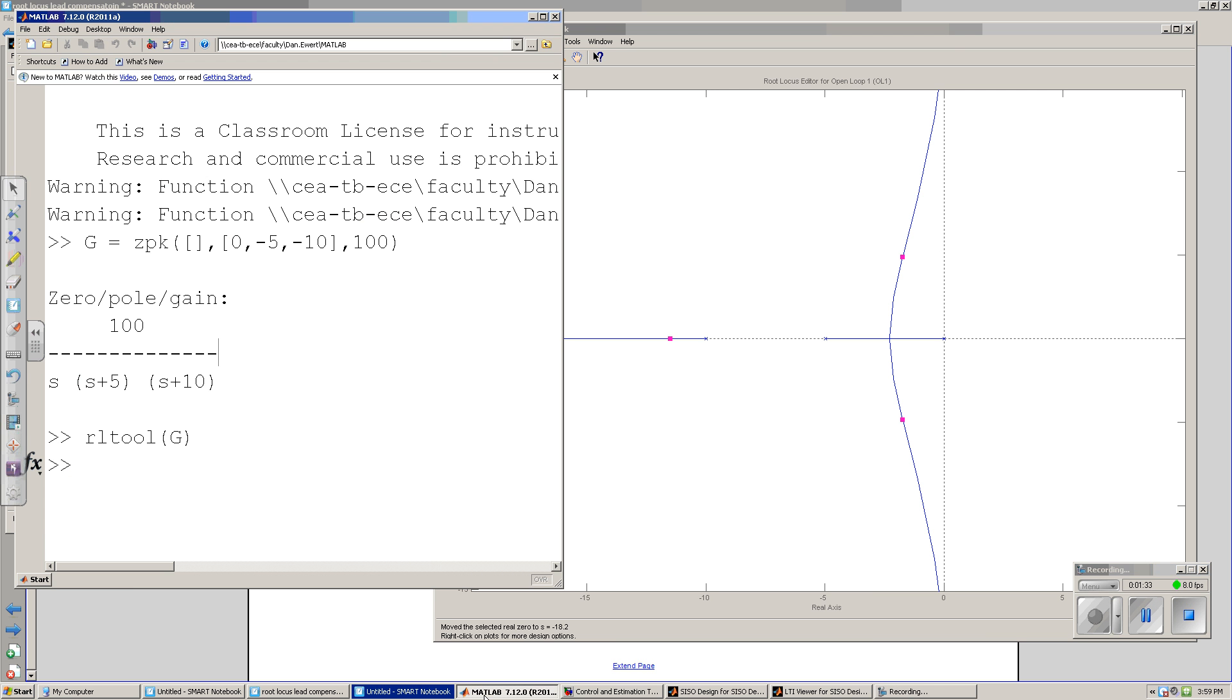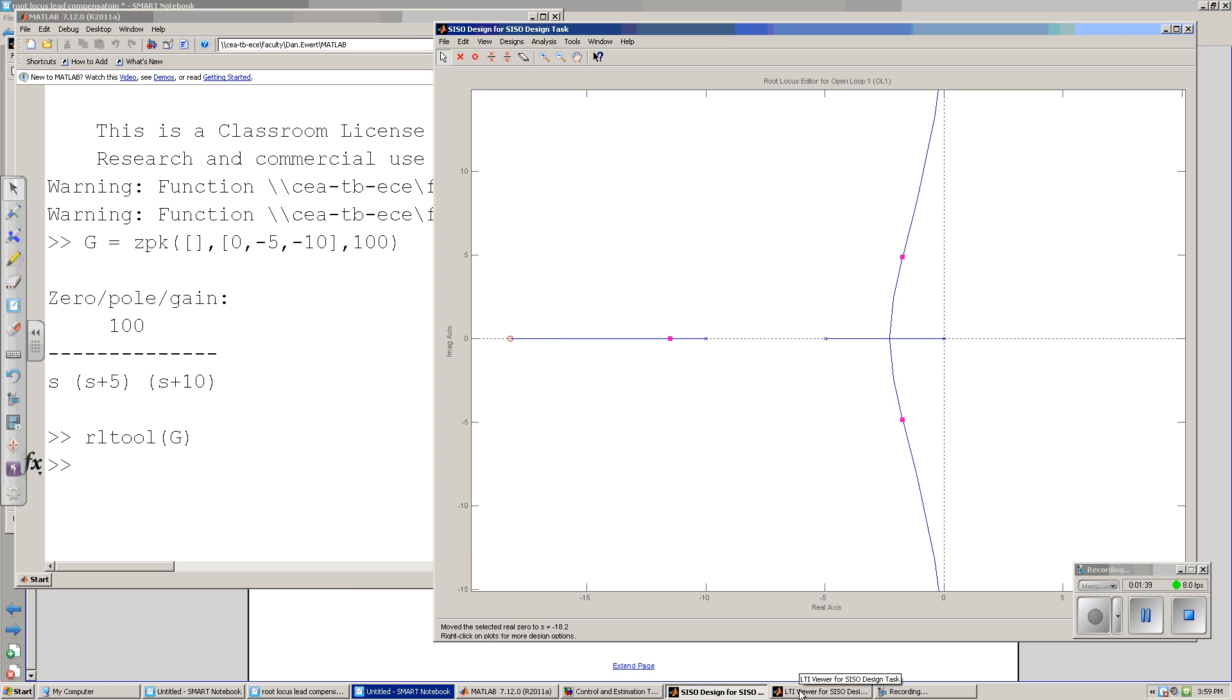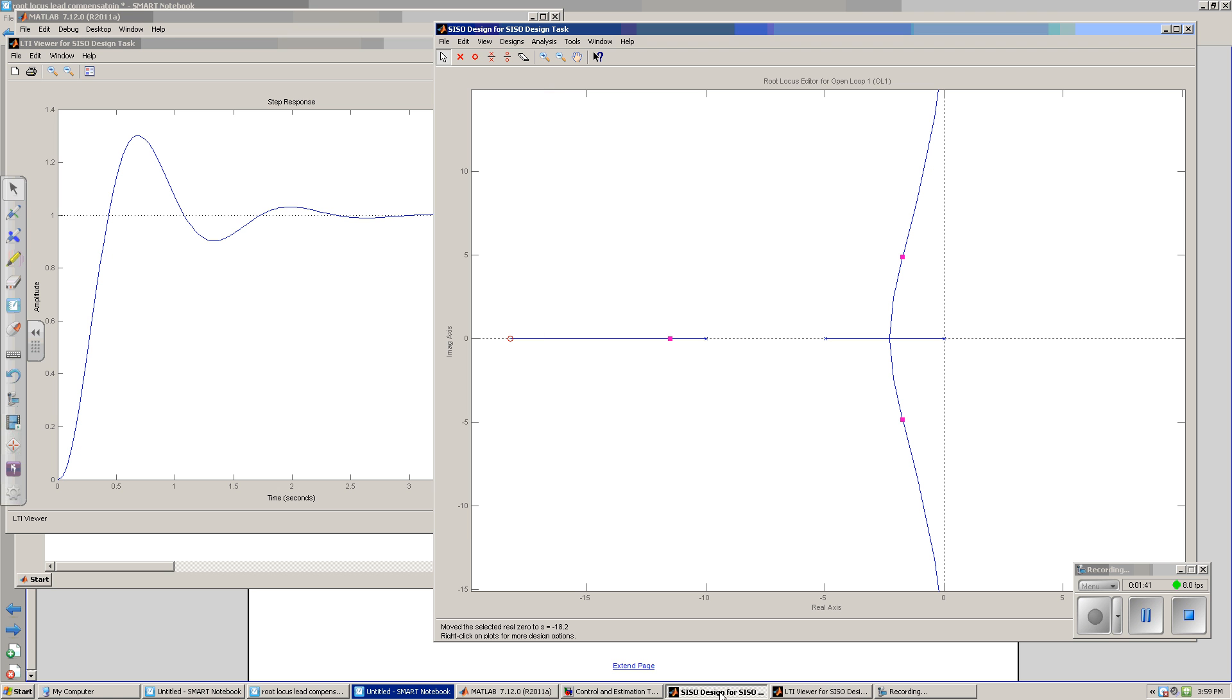Here in MATLAB, I've taken the third order system on the root locus with RL tool, and I've also added a zero. That will be the zero from the lead compensator. As I take the zero, put it very, very far left, I have basically done nothing to the zero. The zero hasn't improved the system at all.